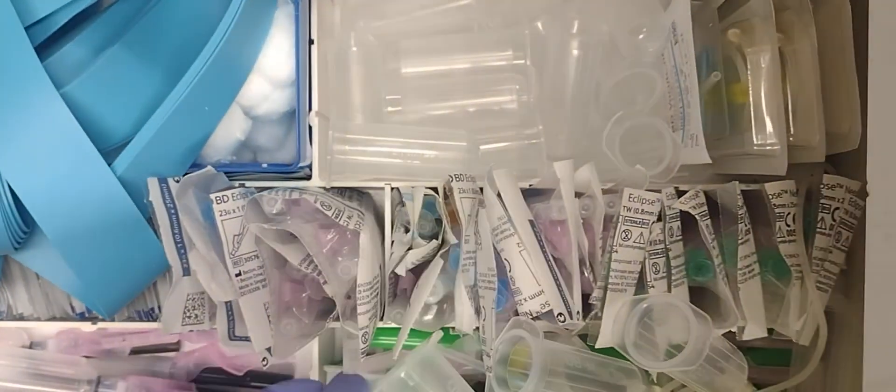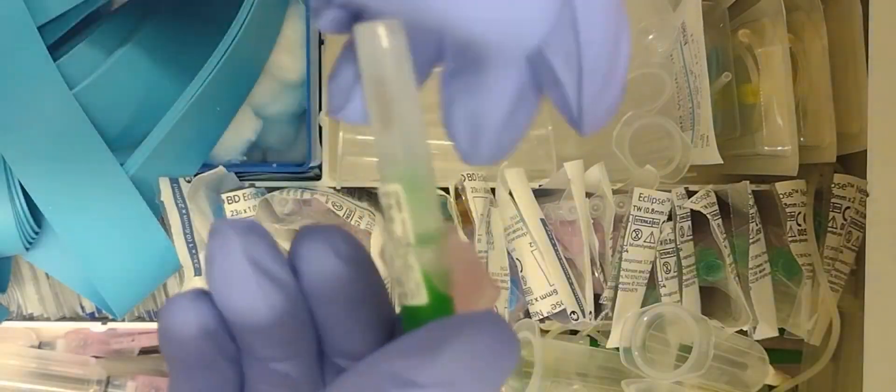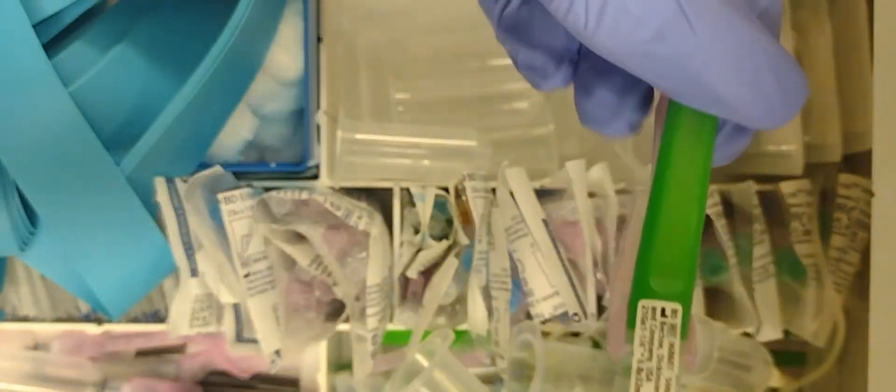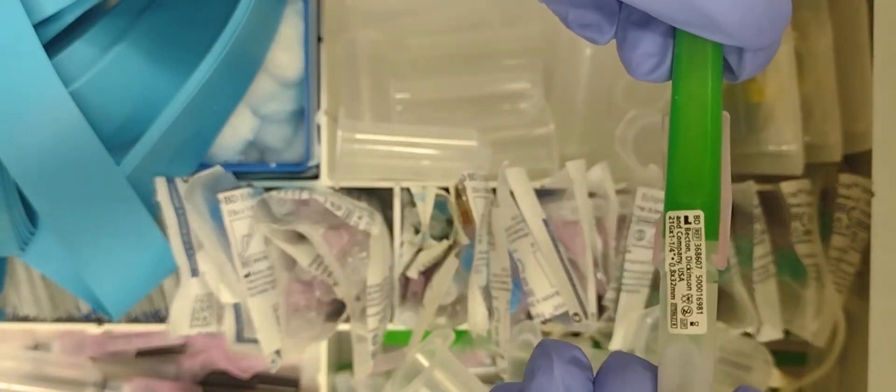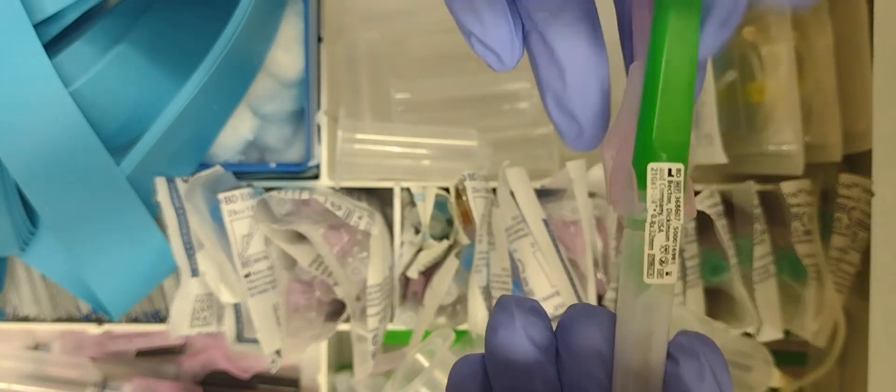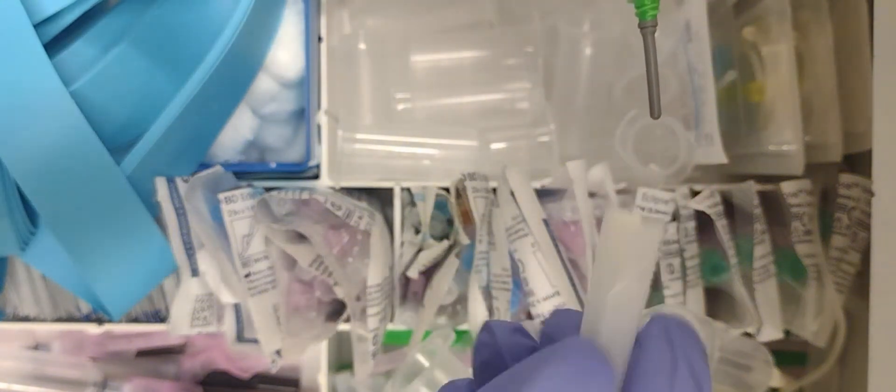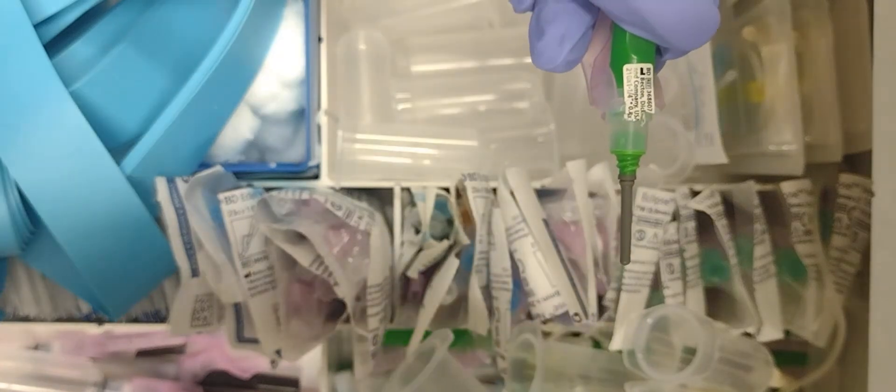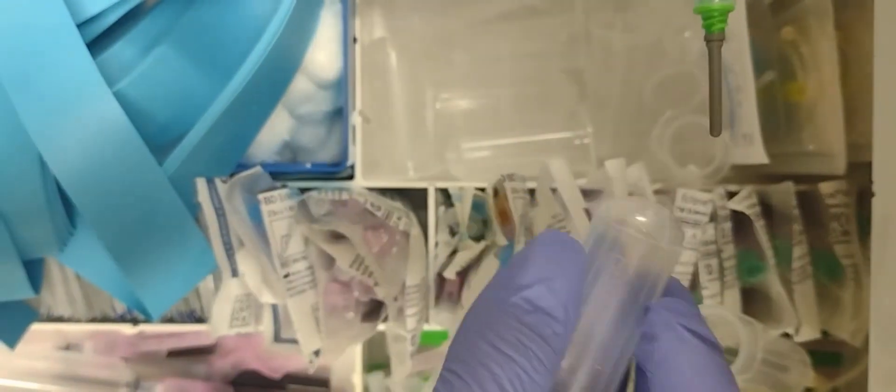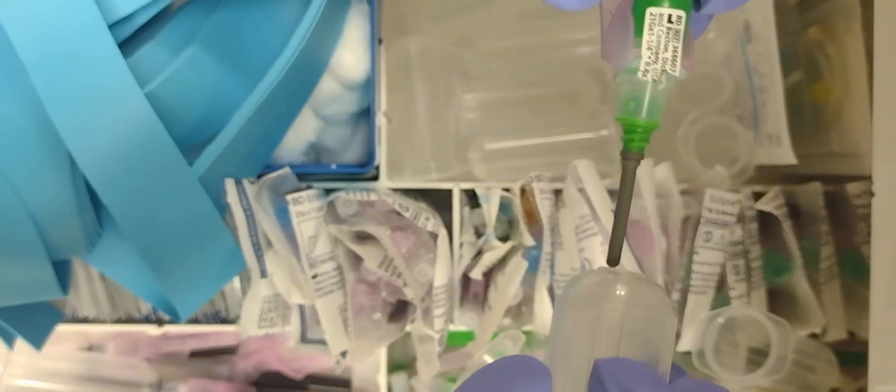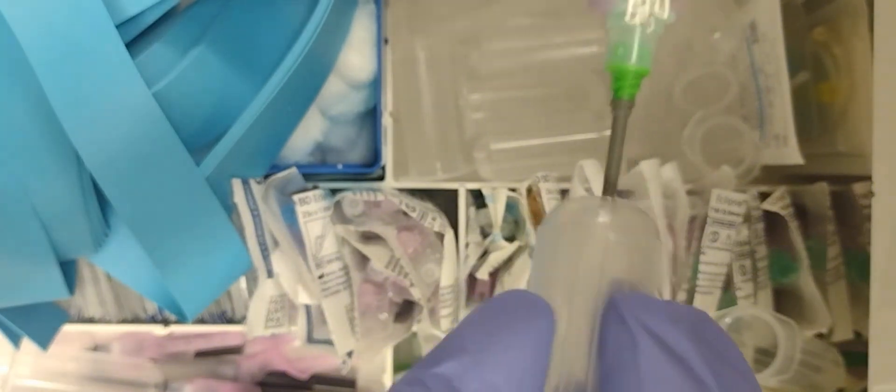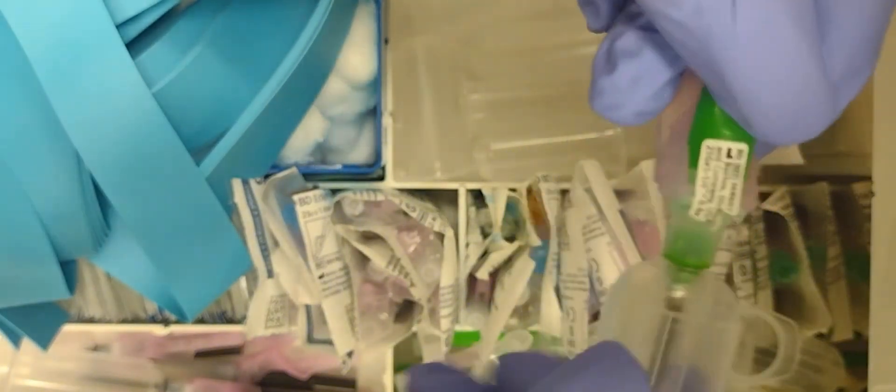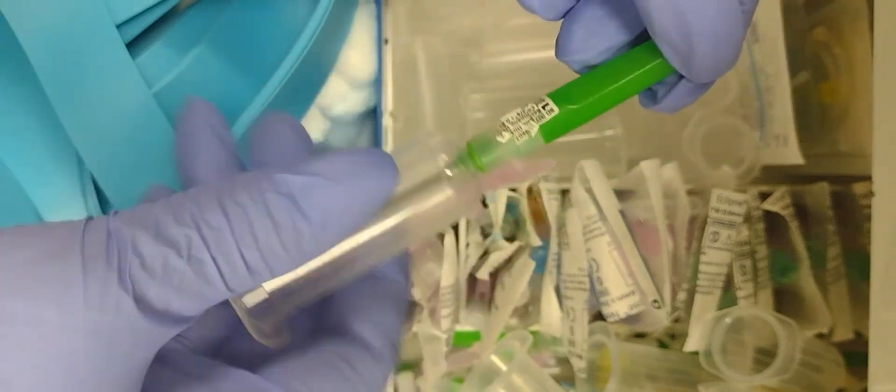So what this is over here is a bigger gauge needle. This is a 21 straight vacutainer needle. You do the same way you do with the 22 vacutainer needle: you twist the Huber on. And it's a larger needle.